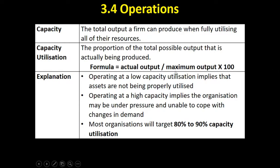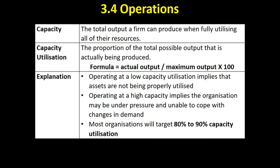There are some general rules we can apply. Operating at low capacity — anything below about 60 to 70% — would probably be considered fairly low. It implies that an organisation's assets are not being properly utilised. Factory buildings may not even be in use, machines are sitting around not producing goods or services, and workers may not be used effectively — we're paying them by the hour but they're not actually producing goods for us.